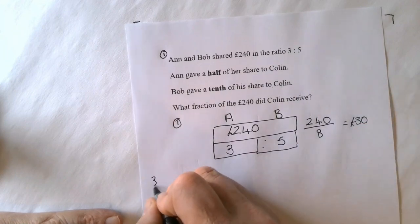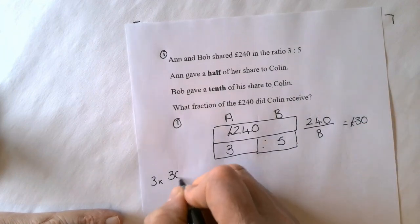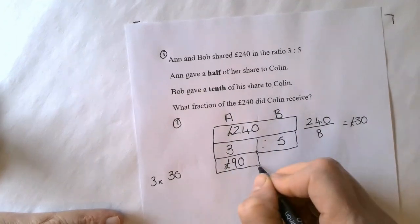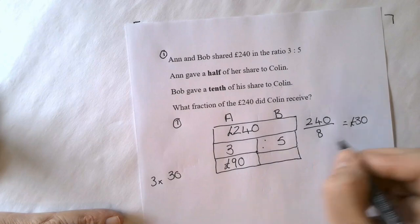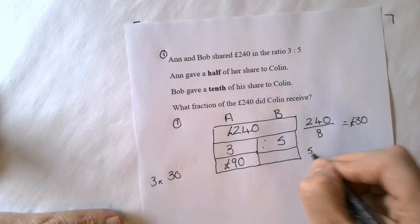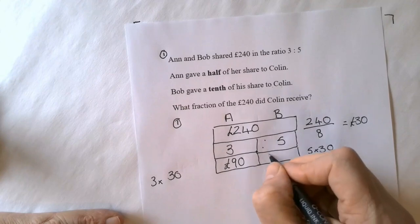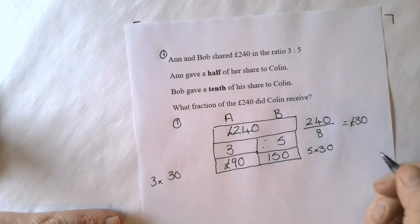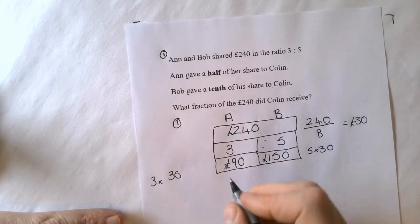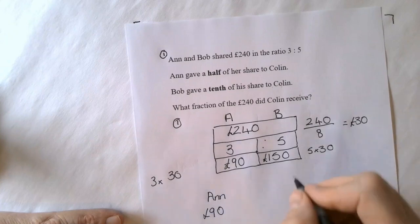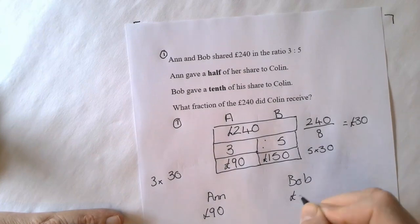So for Ann you do 3 multiplied by 30 to give 90 pounds. Bob you do 5 multiplied by 30 which will give you 150 pounds. So Ann's got 90 pounds and Bob has 150 pounds.